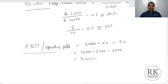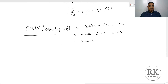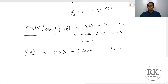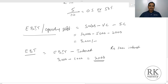Then you have earnings before tax. Earnings before tax equals EBIT minus interest. Assuming this company borrowed a loan on which it pays Rs.1,000 as interest, your earnings before tax is Rs.3,000 minus Rs.1,000, which gives Rs.2,000.